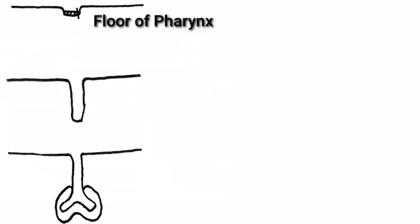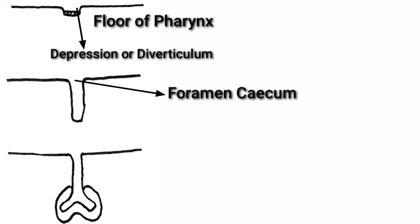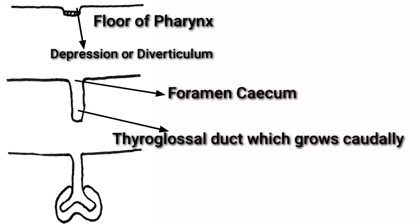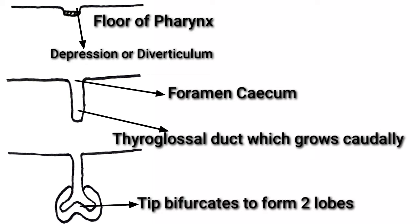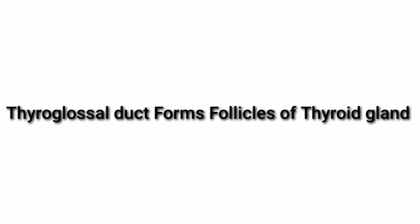As I said, in the floor of the primitive pharynx, this is the depression or diverticulum formed by the epithelium. This is the foramen cecum, which is the opening of the thyroglosal duct. This is the thyroglosal duct, which grows caudally, and the tip of the thyroglosal duct bifurcates to form the two lobes of the thyroid gland. Remember, the thyroglosal duct forms the follicles of thyroid gland.